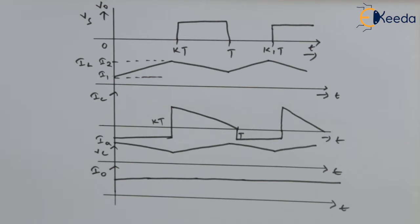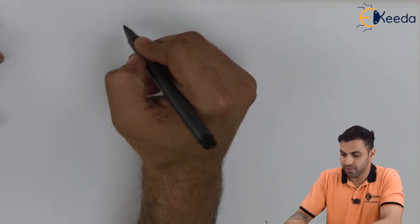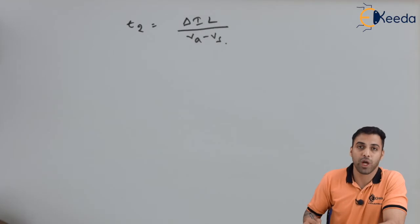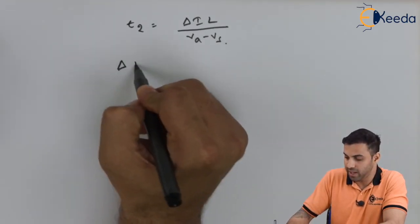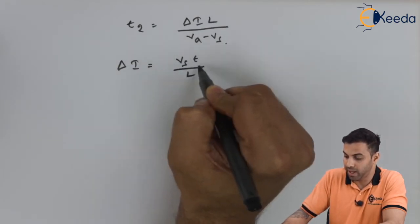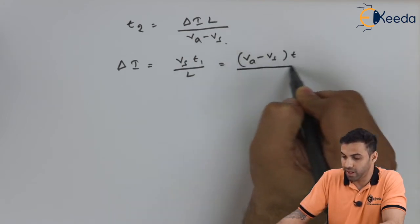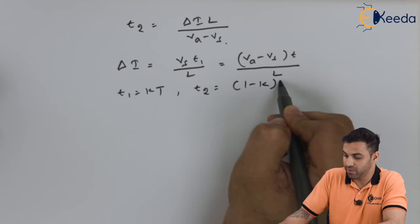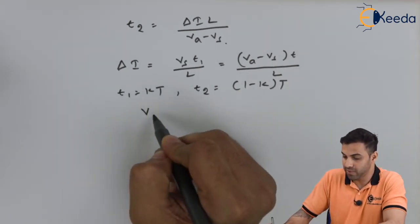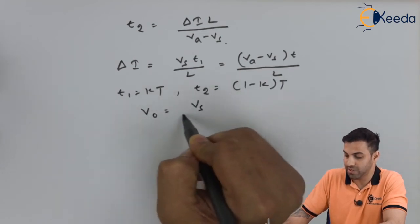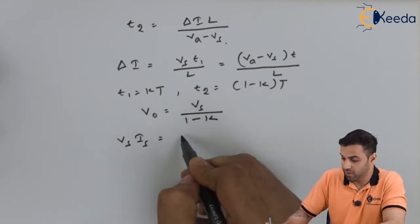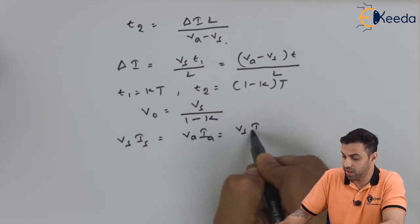The output voltage is greater than the input voltage. Mathematically, T2 equals delta I times L divided by (Va minus Vs). The ripple current delta I equals Vs times T1 divided by L, which also equals (Va minus Vs) times T2 divided by L, where T1 equals K times T and T2 equals (1 minus K) times T. Solving this gives V0 equal to Vs divided by (1 minus K). Also, Vs times Is equals VA times Ia, giving Is equal to I0 divided by (1 minus K), assuming zero switching loss.